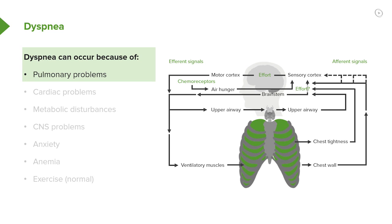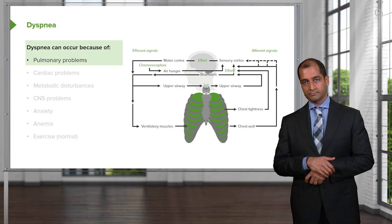The sternocleidomastoid will become important to us when we talk about a condition that a child might be suffering from, known as status asthmaticus, and why it's so important to understand when these accessory muscles are kicking in — because after muscle fatigue, your patient might die.